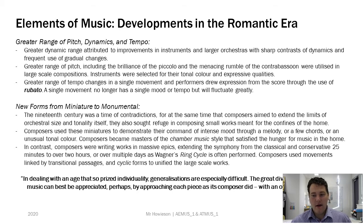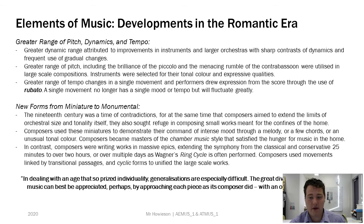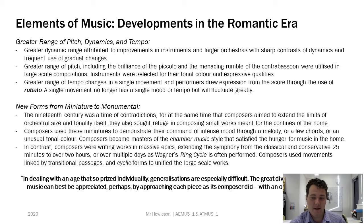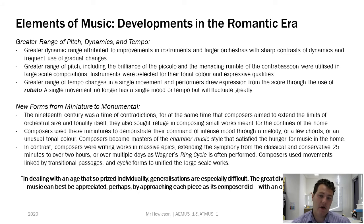This quote from Kamien sums up the Romantic period well: 'In dealing with an age that so prized individuality, generalisations are especially difficult. The great diversity found in Romantic music can best be appreciated perhaps by approaching each piece as this composer did — with an open mind and heart.' Now try coming up with a working definition of Romanticism. Watch the video again, look at each of the different elements, and then try to put it into one or two sentences that you could put at the top of an essay or a CHA test.